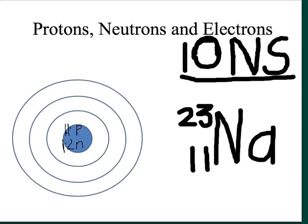Okay, so it's got a mass number of 23, atomic number of 11. That means 11 protons, and 23 minus 11, 12 neutrons.